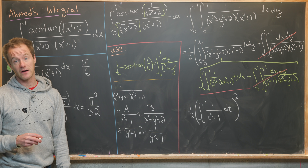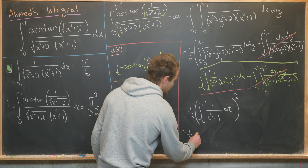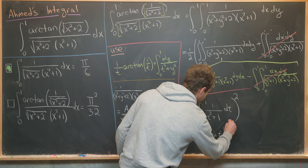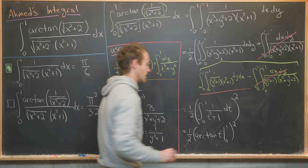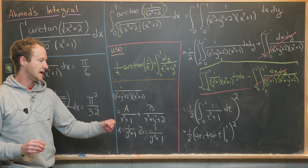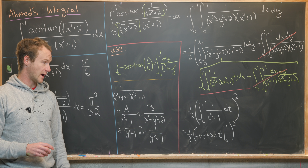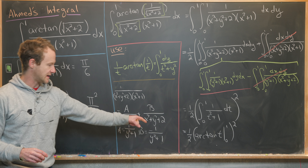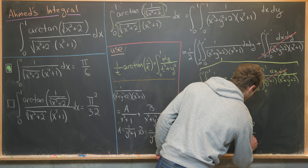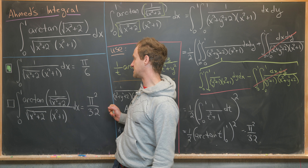So we have one half times the integral from zero to one of one over t squared plus one dt, quantity squared. That integral is arctan of t from zero to one, squared. Arctan of one is pi over four, arctan of zero is zero, so we get pi over four squared equals pi squared over 16. Times one half gives us pi squared over 32 — exactly our second identity.